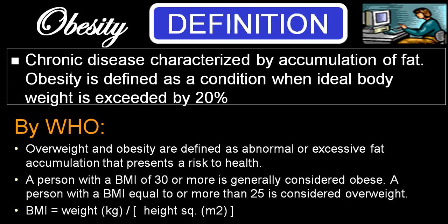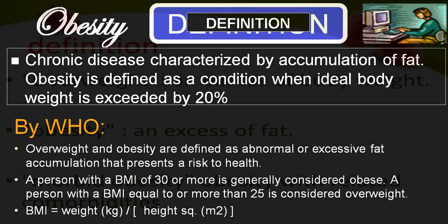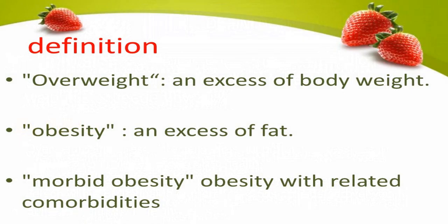Obesity is a condition when ideal body weight exceeds by 20% for that particular person based on height and age. We call that obesity, and it must be due to accumulation of fat. Overweight is an excess of body weight; obesity means excess fat — more than 20% of expected weight. Morbid obesity is obesity with related comorbid conditions, and when BMI exceeds 40, we call it severe obesity.